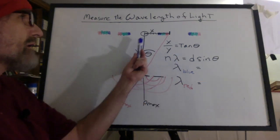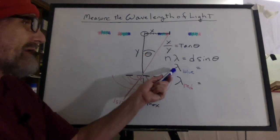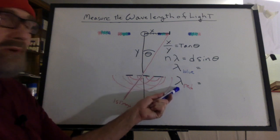You could do it all again, going out to the second maximum. And then N would be two. If you do that, you'll find out that the wavelength is still pretty much the same number.